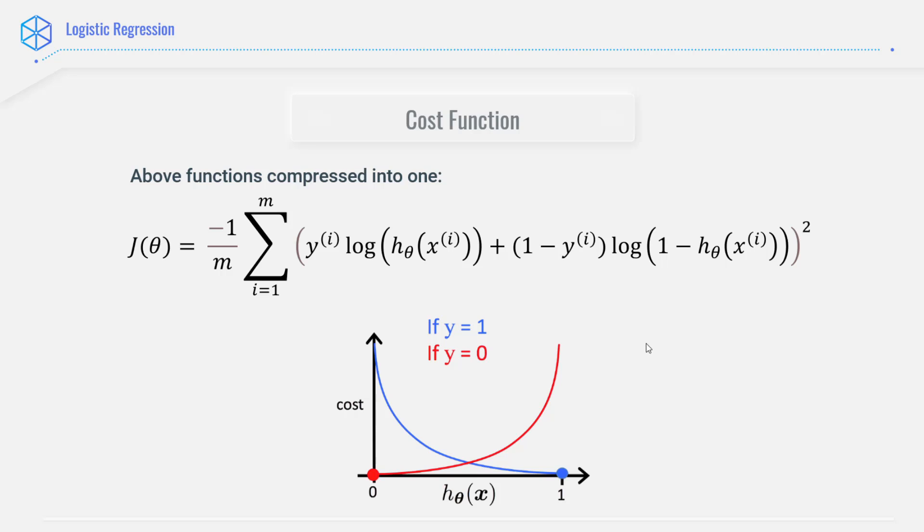So this is the compressed equation. If y equals to 0, this part of the term cancels out, and if y equals to 1, you can see that this part of the equation will cancel out. And in both cases, we'll only be performing the operations that we need to perform.